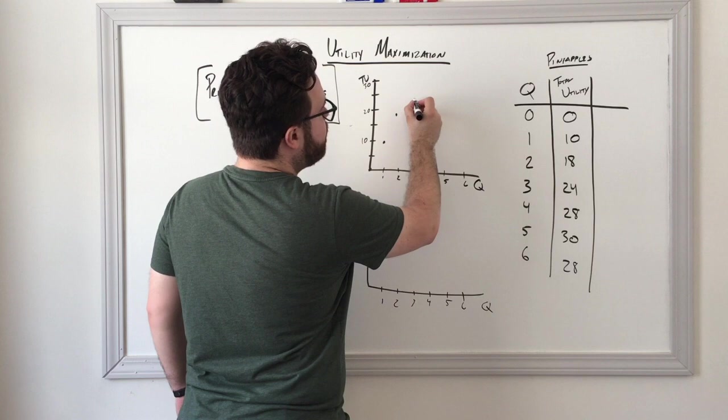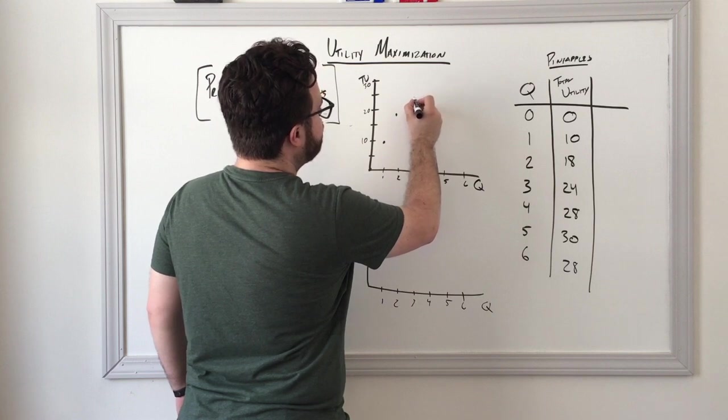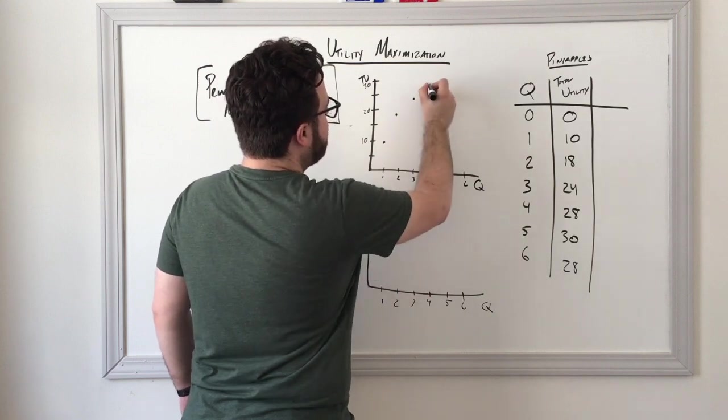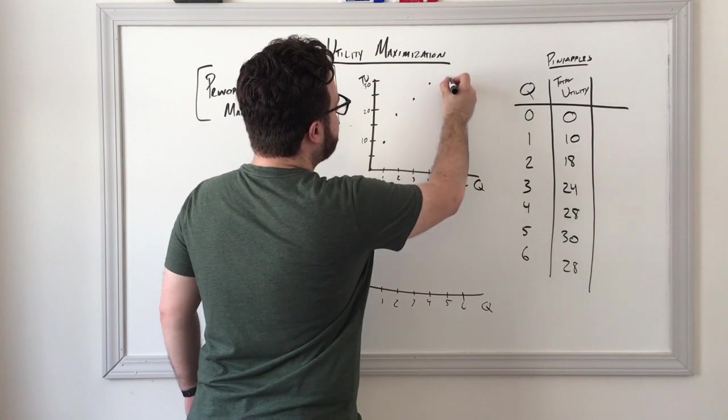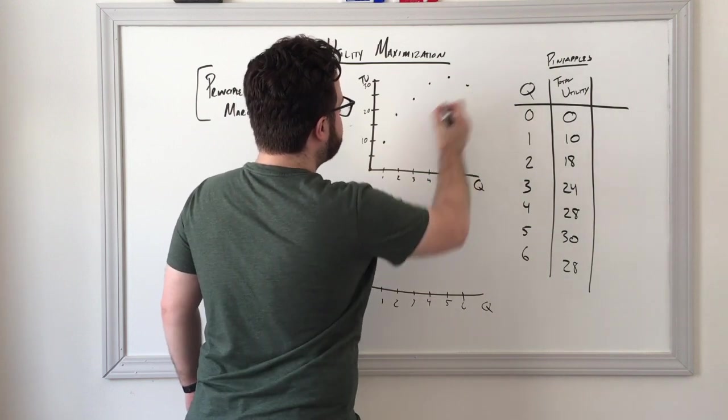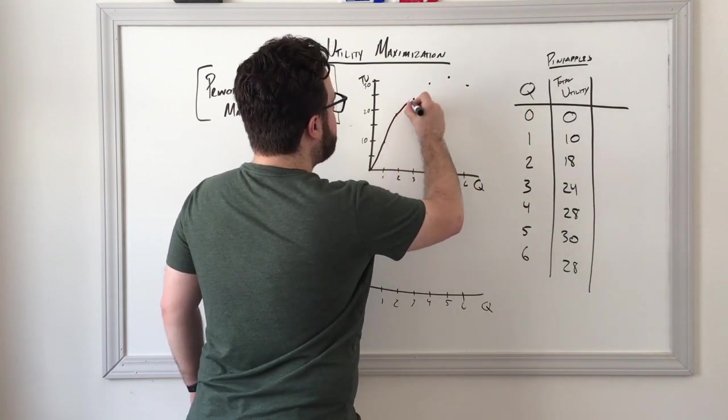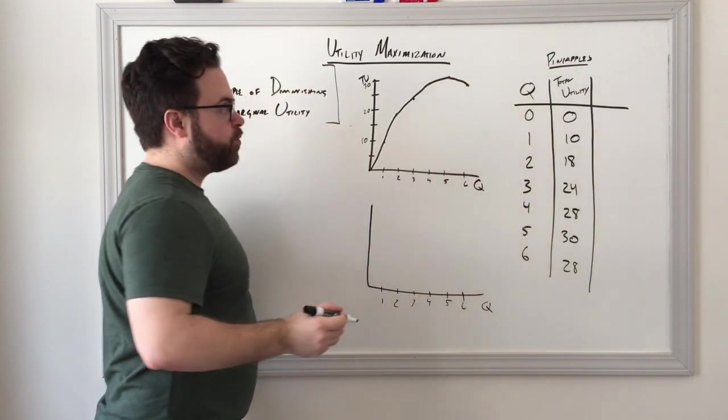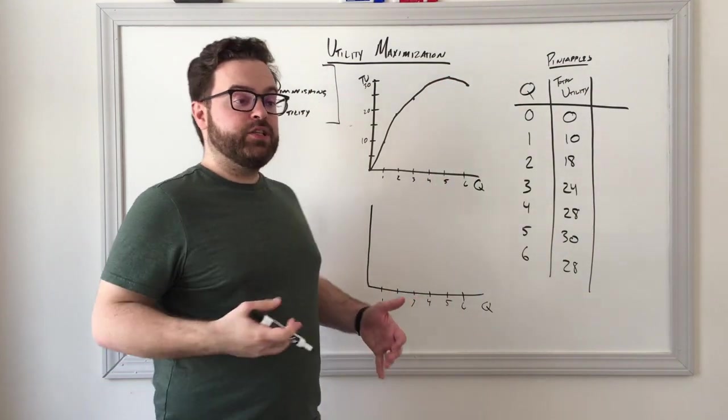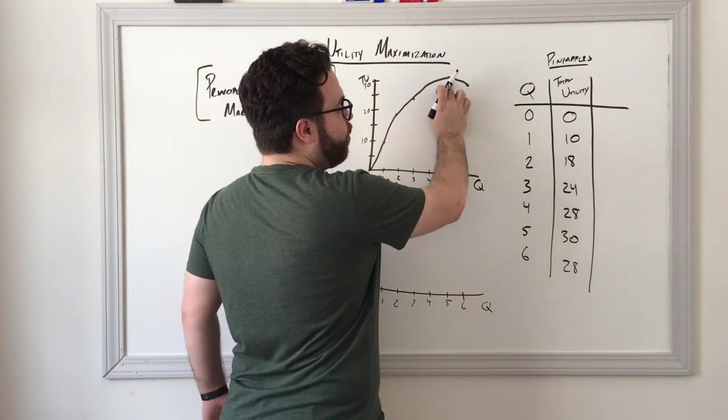But then the slope starts to diminish as we consume more and more of the good until the point where it actually comes back down. And if we're maximizing utility, we want to maximize it at this point.